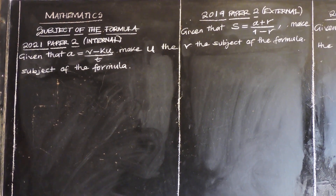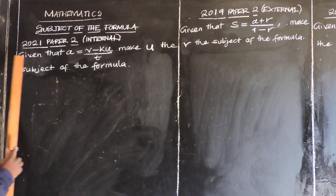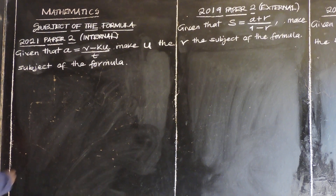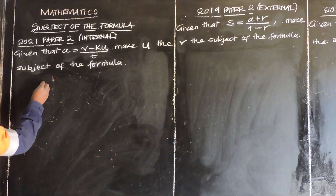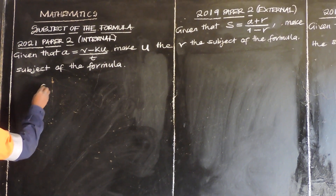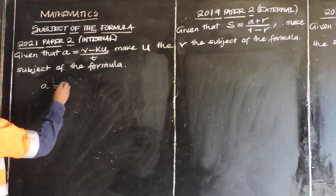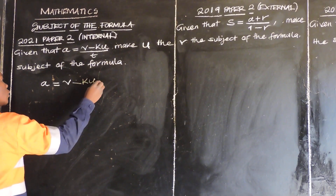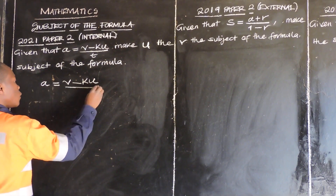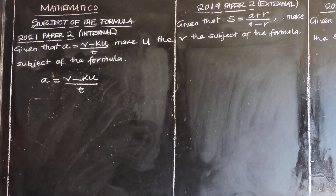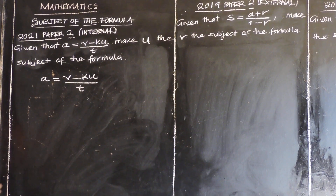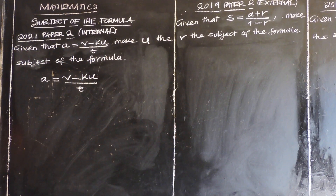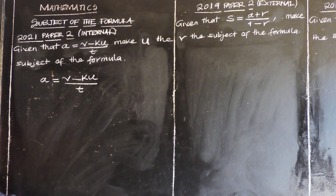Let us look at 2021 paper 2. It says, given that A is equal to V minus KU over T. The question is saying make U the subject of the formula. They want us to change the subject of the formula to U.